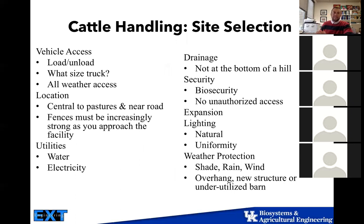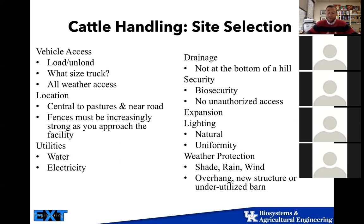Talking about site selection: we have to have vehicle access — the ability to unload and load animals. I talked to a producer who couldn't load out his cattle because the ground was so wet. You need a load-out and unload area. Consider what size of truck you're bringing in — most of the time it's going to be a crew cab with a 20 or 24 foot cattle trailer. There are specifications for proper turning radius. If you're bringing a semi, that's a completely different scenario. All-weather access is important — can you only access it in dry months, or do you need year-round access to load animals in an emergency or to sell them?